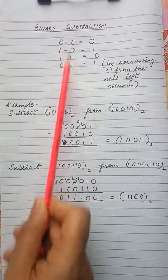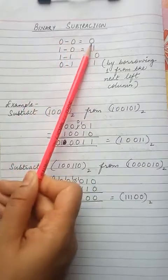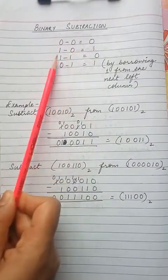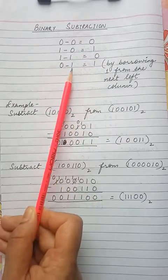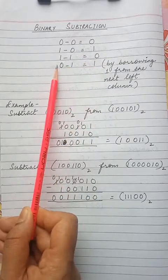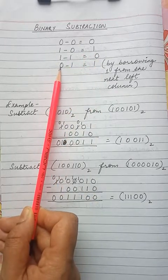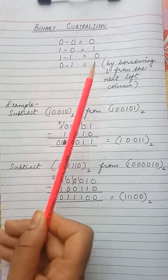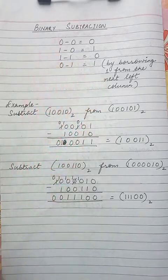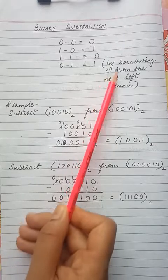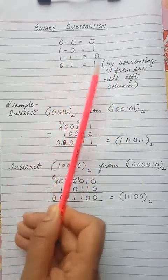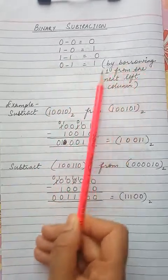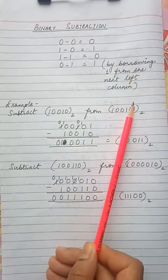These are the rules for binary subtraction: 0 minus 0 is 0, 1 minus 0 is 1, 1 minus 1 is 0. But when 1 is subtracted from 0, since 0 is a smaller number, we have to borrow 1 from the left digit — the left side column. So it becomes 10, and 0 minus 1 equals 1 by borrowing 1 from the next left column.